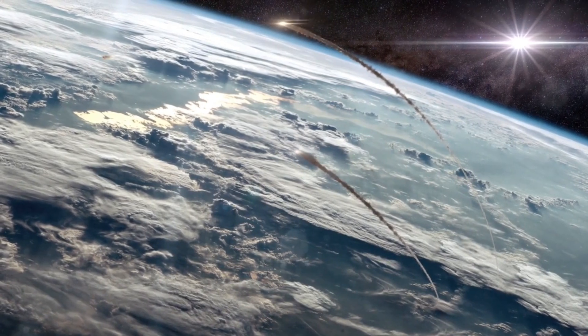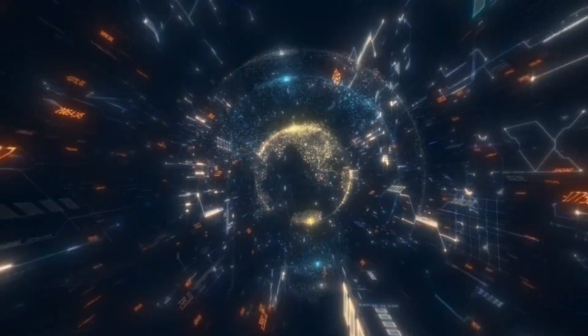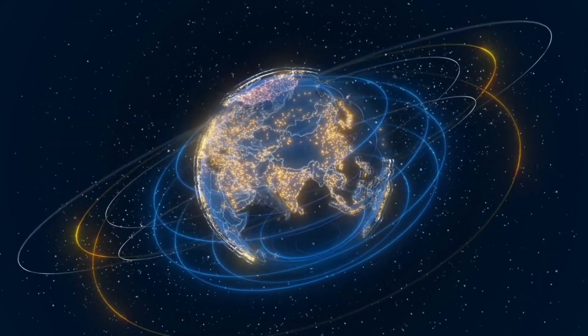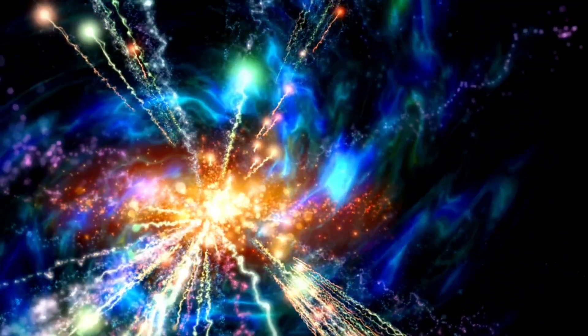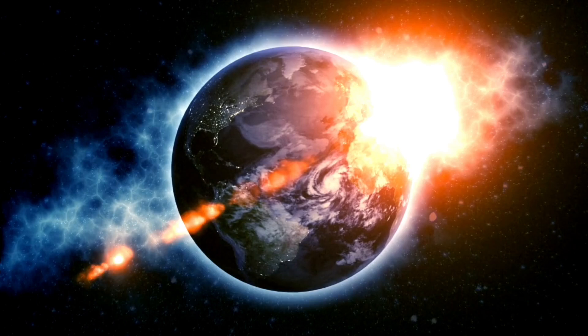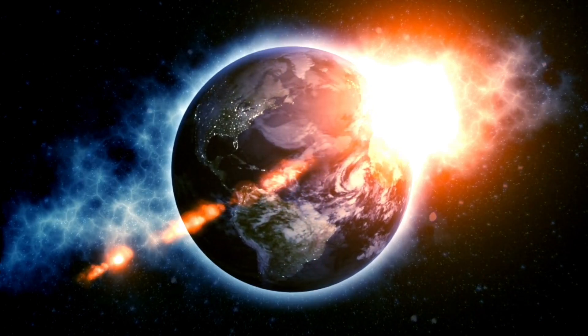K2-18b has emerged as one of the most promising candidates for this new class of exoplanets. If it truly fits the Hycean model, it could possess a colossal ocean that makes up the majority of the planet's mass, perhaps up to 90 percent. These oceans might be shielded beneath thick atmospheric layers, allowing for microbial ecosystems to thrive in deep thermally stable environments, just as similar extremophiles do near Earth's deep-sea hydrothermal vents.